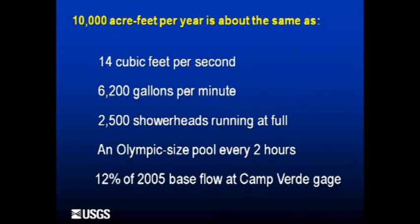If you're not familiar with 10,000 acre-feet per year, here are some handy conversions. If you're a kayaker you may be familiar with cubic feet per second — 10,000 acre-feet per year is about 14 cubic feet per second flowing at a constant rate all year long. It's also about 6,200 gallons per minute, or about 2,500 shower heads running at full blast — roughly a two-and-a-half gallon per minute shower head. It's about an Olympic-sized swimming pool every two hours, actually a little less. And it is 12% of the base flow measured at the Camp Verde downstream gauge in 2005 — not 50%, not 90%, not 100%, about 12%. Humans have changed base flow.